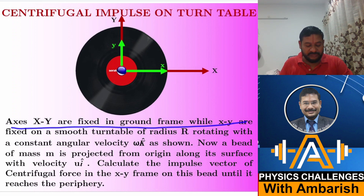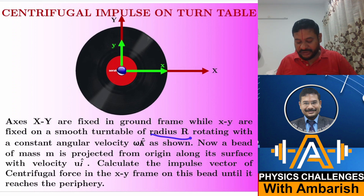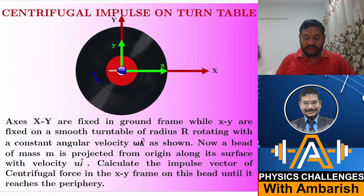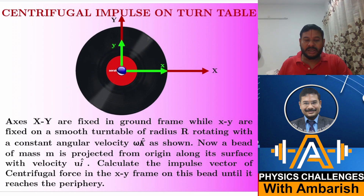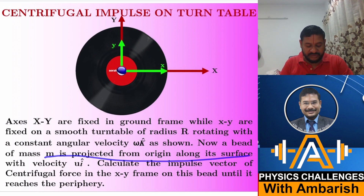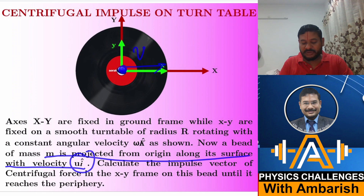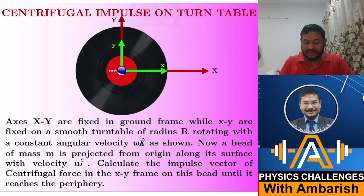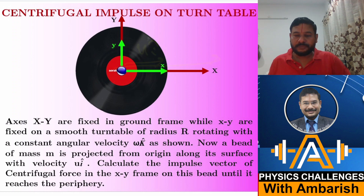Small x and small y are fixed on the turntable rotating with constant angular velocity ω k-cap, so the angular velocity vector is coming out of the page. A bead of mass m is projected from the origin along its surface with velocity u î. So the bead is projected with speed u î like this.